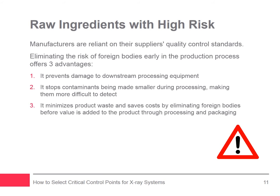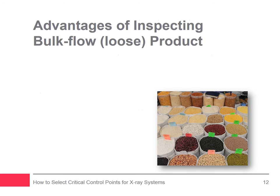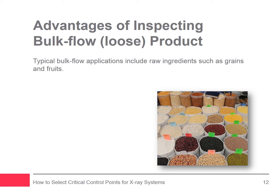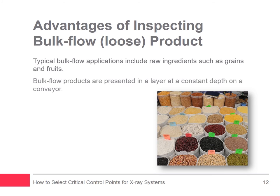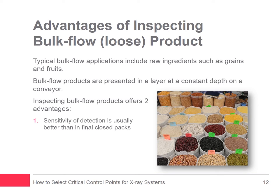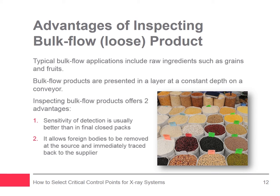Typical bulk flow applications include peanuts, extruded snacks, dry fruits, vegetables, sweets, and pulses. Bulk flow products are presented in a layer at a constant depth on a conveyor, typically 25 millimeters or less. This shallow depth offers outstanding levels of sensitivity for x-ray inspection — up to four times more sensitivity than inspecting finished packs. That's why it's worth thinking about placing an x-ray system early in the process where it can inspect incoming goods or raw materials. It allows foreign bodies to be removed at the source and immediately traced back to the supplier.